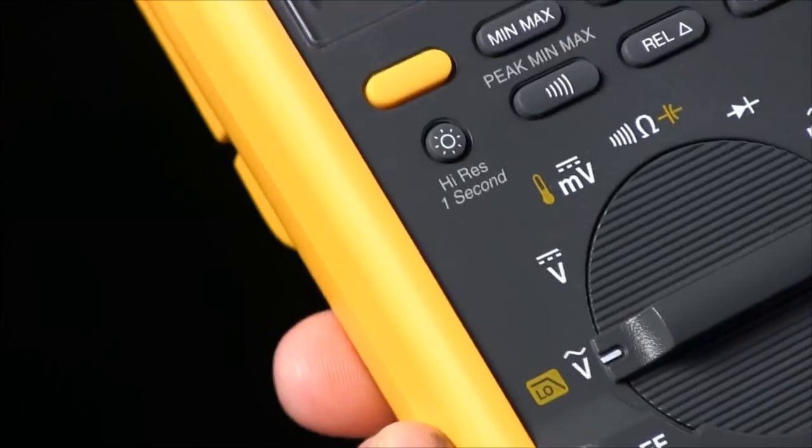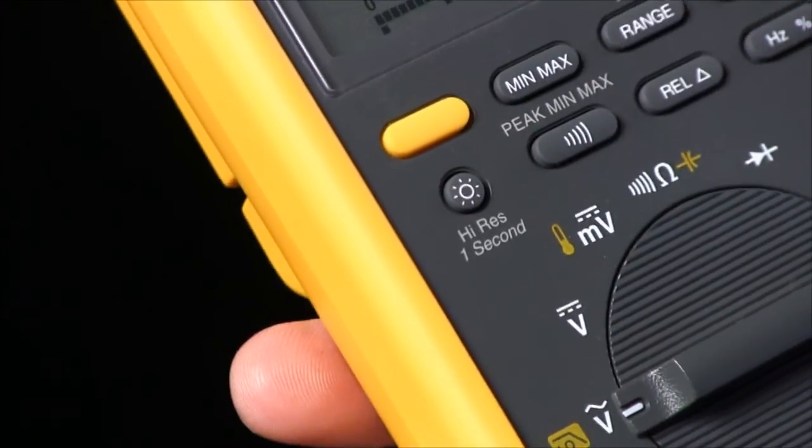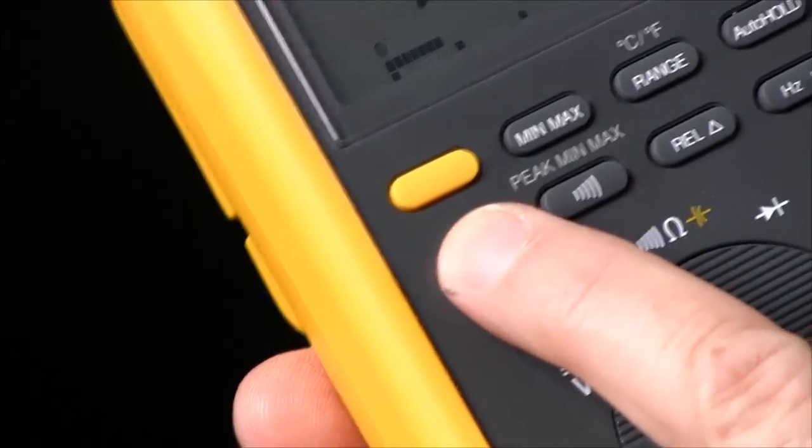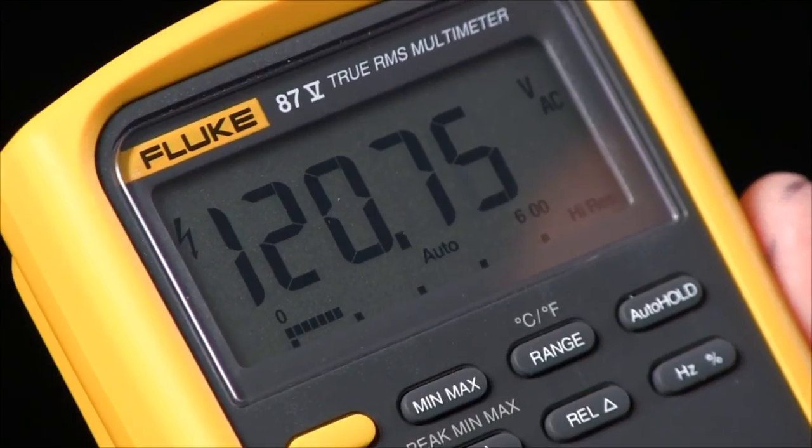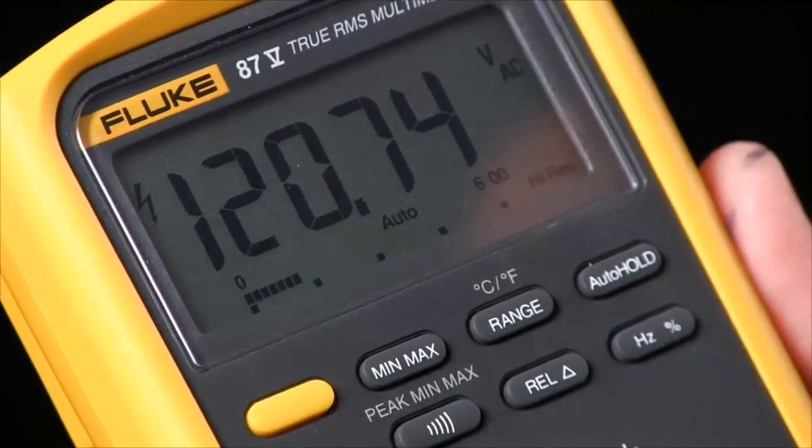Fluke 87 actually is two meters in one. One is your 6,000 count normal multimeter and then by pressing the backlight button and holding it for a second, it shifts into a 20,000 count where now you see we have an extra digit worth of resolution going to the right.